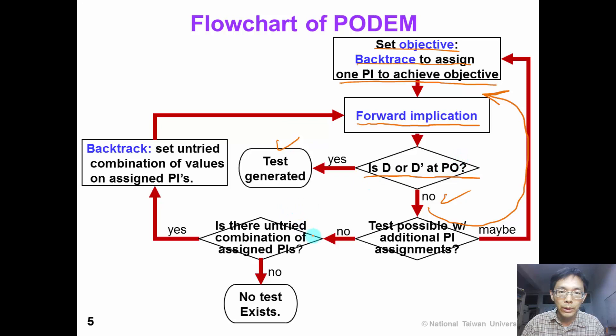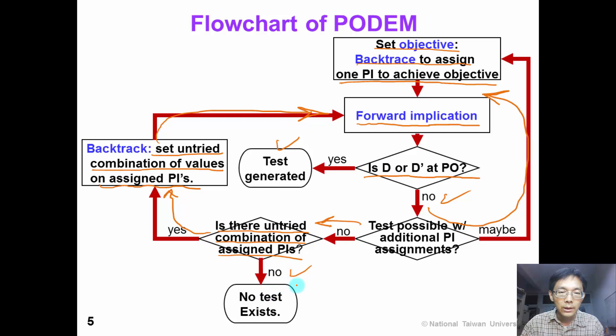If test is impossible with the current assignment, we check if there is any untried combination of assigned primary input. If so, we need a backtrack — we set an untried combination of values on the assigned inputs and continue to forward implication. Otherwise, if there is no more choice to backtrack, then the test generation fails and this is an untestable fault. This is a conceptual flowchart of PODEM.